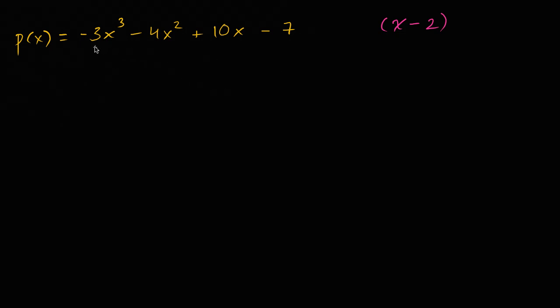The polynomial remainder theorem tells us that when I take a polynomial p of x and divide it by x minus a, the remainder is just going to be equal to p of a.